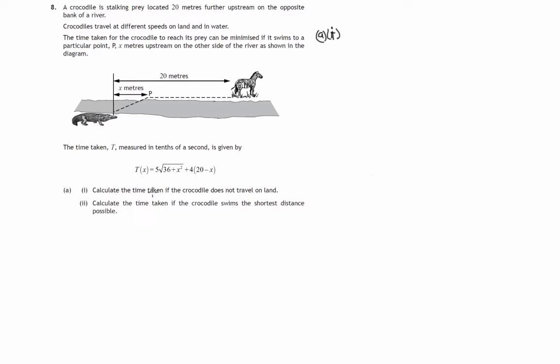We're told to calculate the time taken if the crocodile does not travel on land. So if it doesn't travel on land, the landing point p will be at the zebra. In other words, this distance x will have to be 20 meters. So we would work out the value of the time when x is 20. We plug that into this formula: 5 times the square root of 36 plus 20 squared, which is 400, plus 4 times 20 minus 20. So that's the substitution.